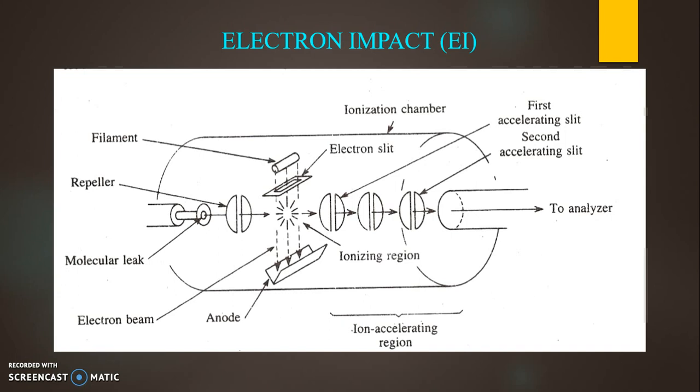The filament is denoted by A. This is the filament. It produces thermal electrons which are then accelerated by anode A. This is anode. In this way, a beam of electrons which intersects the flow of sample molecule is produced resulting in the formation of positively charged ions.